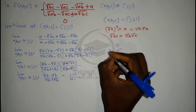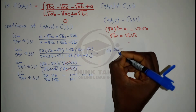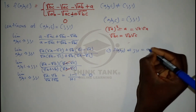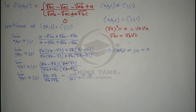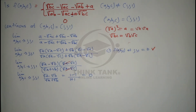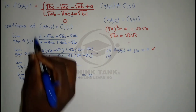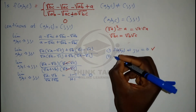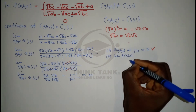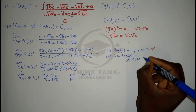Now let's check the conditions for continuity. First: is the function defined at this point? f(a, b, c) at (1,1,1) equals zero — yes, it's defined. First condition satisfied. Second: does the limit exist? Yes, we've calculated the limit of f(a, b, c) as (a, b, c) approaches (1,1,1) and it equals zero. Second condition satisfied.